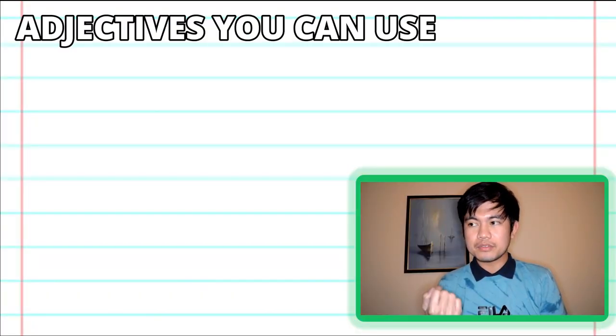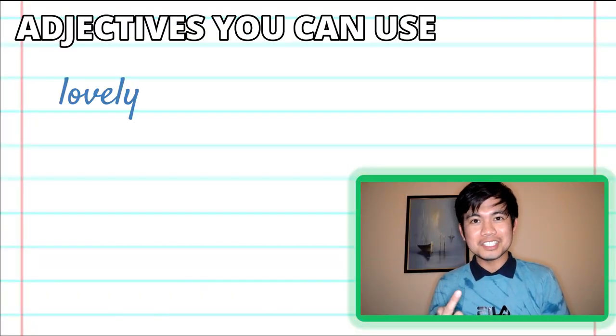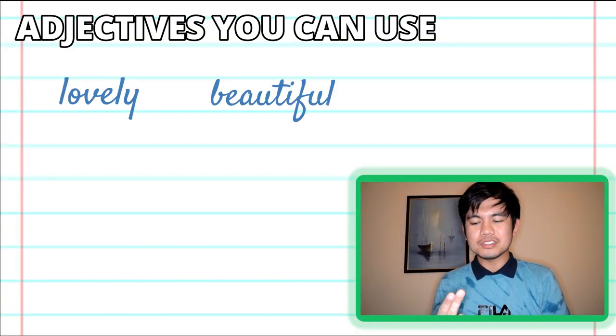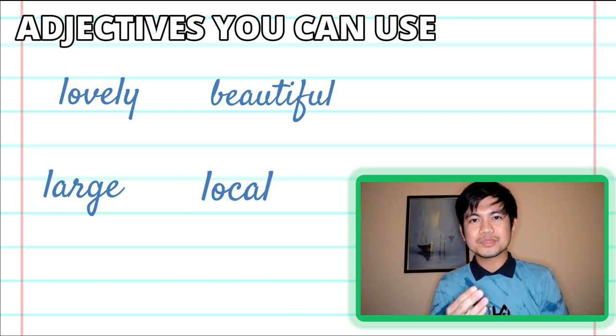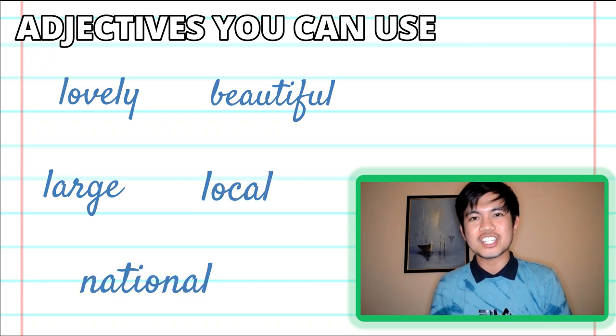When talking about public gardens or parks, prepare some adjectives to describe them — for example, lovely, beautiful, large, local, or national.